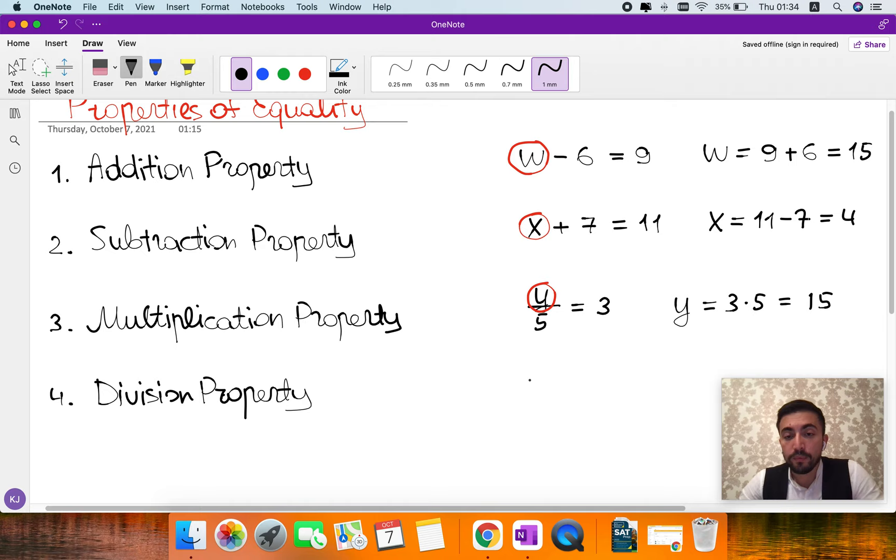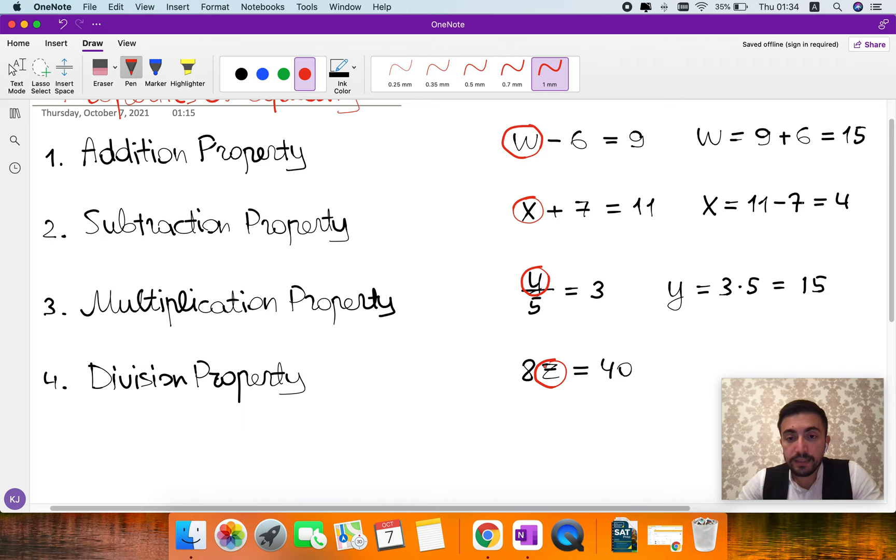And the last one is the division property. So let me give you another example: 8 times Z equals 40. To be able to solve for Z, we need to get rid of 8.